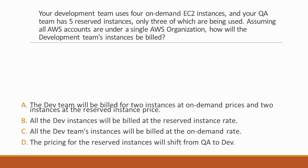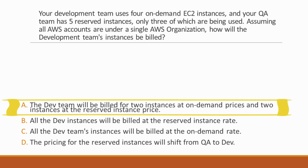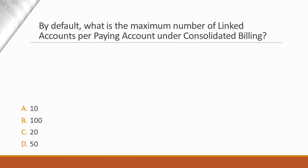Next question: Your development team uses four on-demand EC2 instances, and your QA team has five reserved instances, only three of which are being used. Assuming all accounts are under a single AWS Organization, how will the development team's instances be billed? Correct answer is option A — the dev team will be billed for two instances at on-demand prices and two instances at the reserved instance price, because the unused QA reserved instance pricing will be applied to two of the four dev instances.